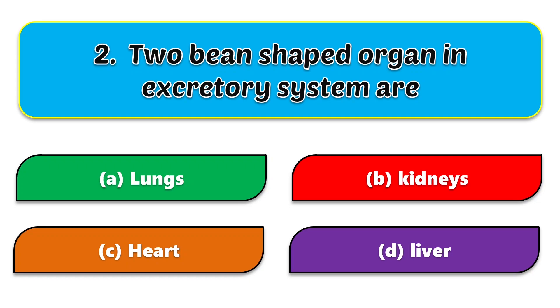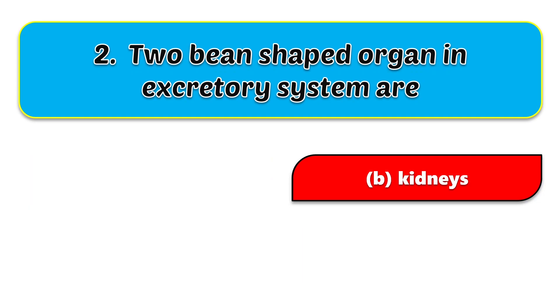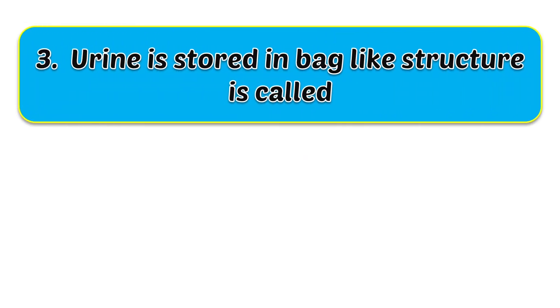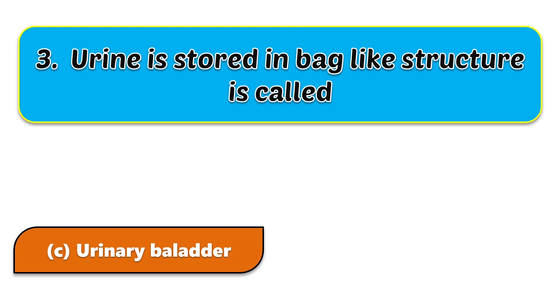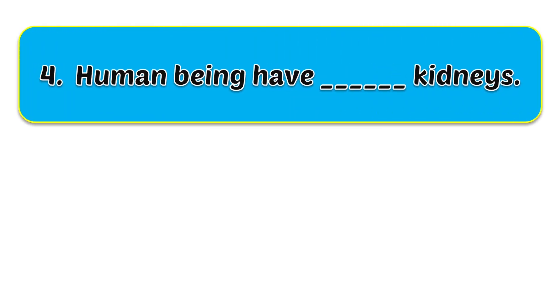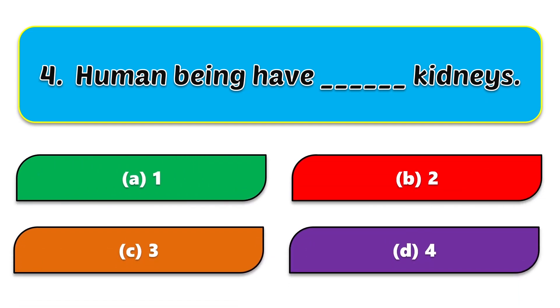Second question: the two bean-shaped organs in the excretory system are — options are lungs, kidneys, heart, and liver. The correct answer is kidneys. Third question: urine is stored in a bag-like structure called — options are kidneys, liver, urinary bladder, and heart. The answer is urinary bladder.